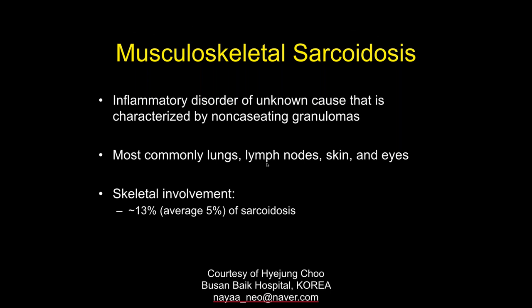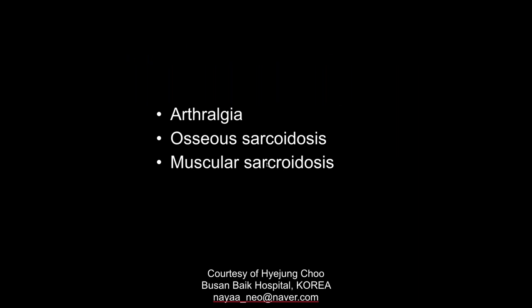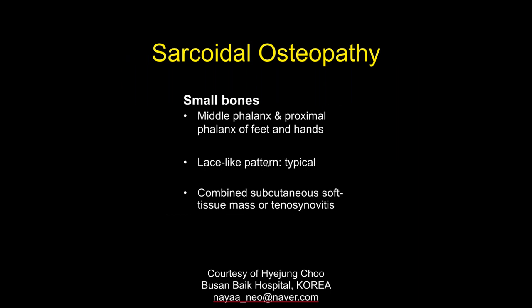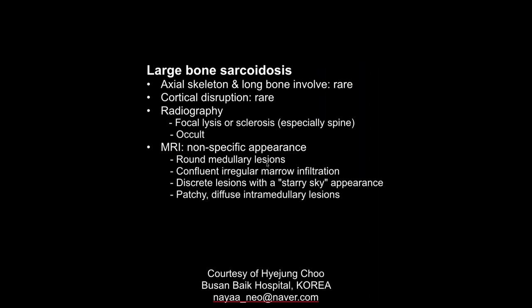Sarcoidosis typically presents with joint disease but can also involve bones and muscles. Most familiar is the lace-like pattern in the small bones of the hand — it's probably happening elsewhere in the body but harder to see in larger bones with projection technique. You also see rounded medullary inflammatory lesions within bone, and we just saw a case of myelopathy where it can also involve the cord and neurologic structures.